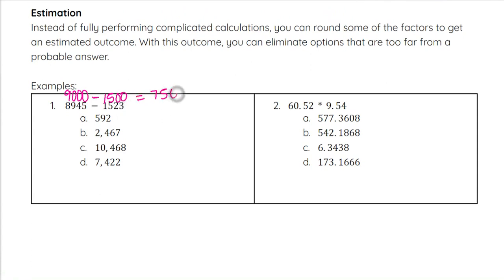If I subtract those, I end up with 7,500. You can see that if we look at our options, 592 is way too far away from 7,500 because we didn't really round or estimate too far from the original numbers. I would probably even go as far to say that B and C would be too far from that 7,500, which would pretty easily put us at D as our answer without having to solve, but using estimation as our technique.